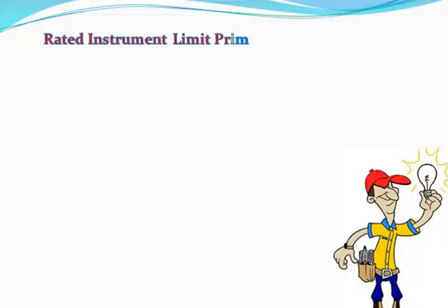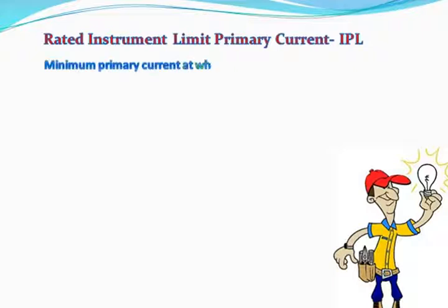Rated instrument limit primary current, or IPL: the minimum primary current at which composite error is greater than 10%.